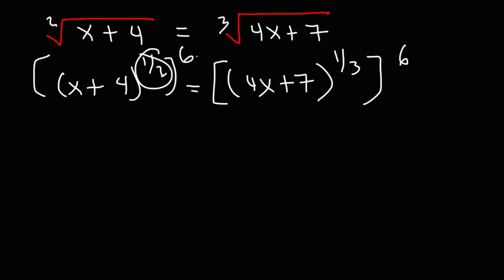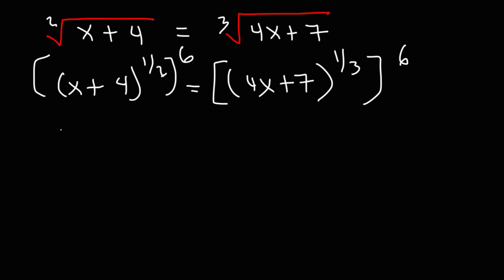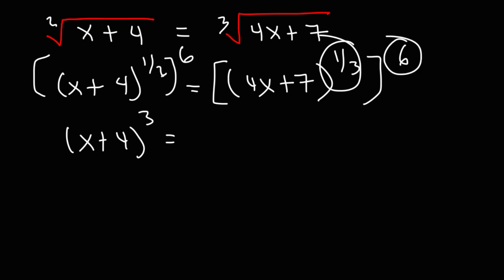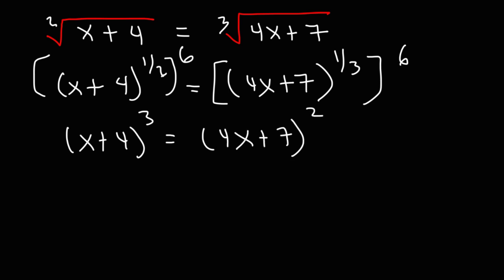When you have one exponent raised to another exponent, you can multiply the two exponents. So 1/2 times 6 is equal to 3, meaning on the left we're going to have x plus 4 raised to the 3rd power. On the right, 1/3 times 6 is 2, so we're going to have 4x plus 7 raised to the 2nd power.